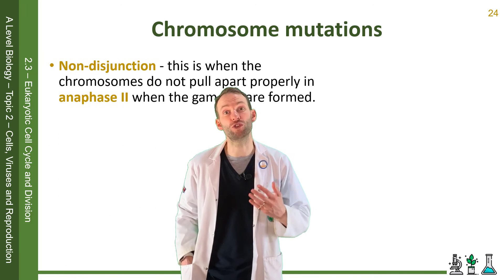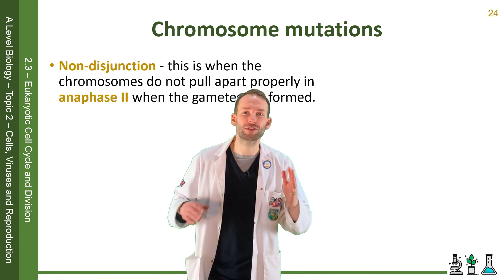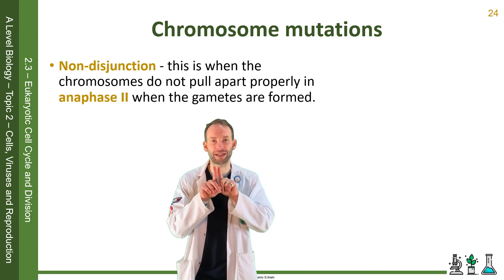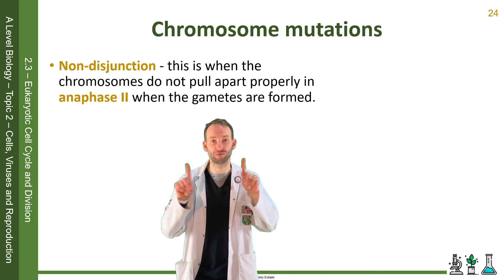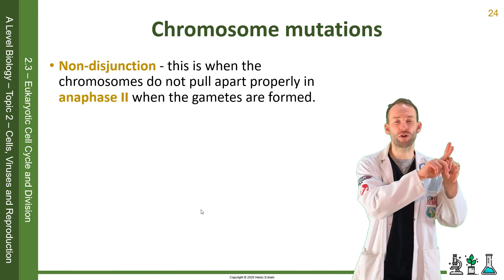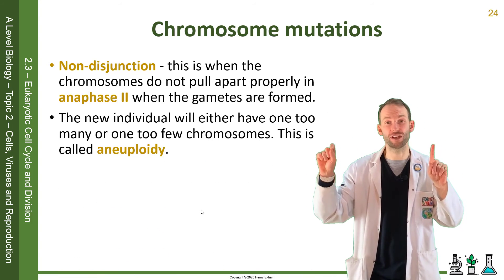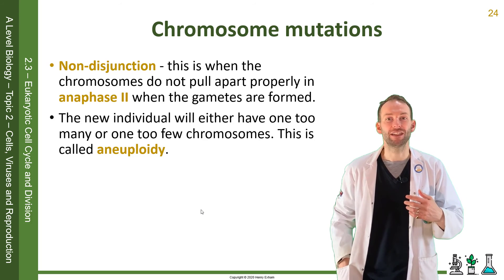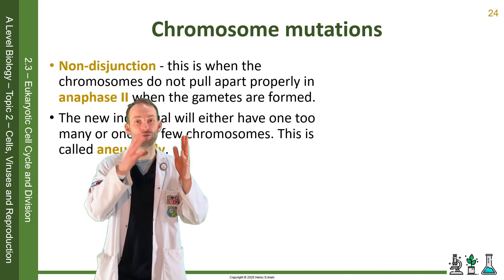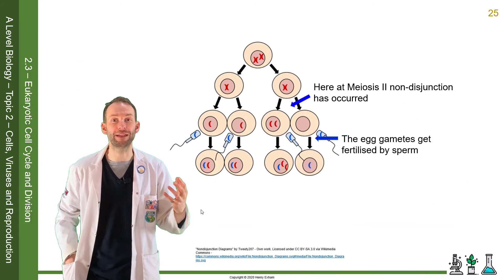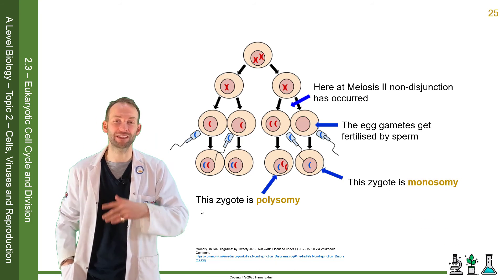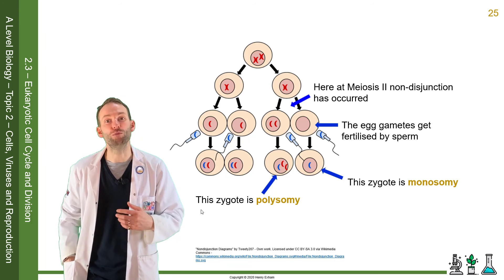Another problem that can occur during meiosis is called non-disjunction. This is when chromosomes do not pull apart properly in anaphase. Normally in anaphase two, you want the centromere split and each of the sister chromatids to go to each side. But sometimes two can go to one side and none to the other side — this is what we call aneuploidy. When you've got one too many, so two go to one side and then the zygote forms with another one, that will end up with three — that's called polysomy. And if none went to one of the gametes, and then when that fuses with the other gamete that would just have one, that's called monosomy.